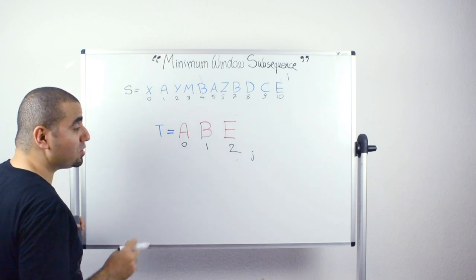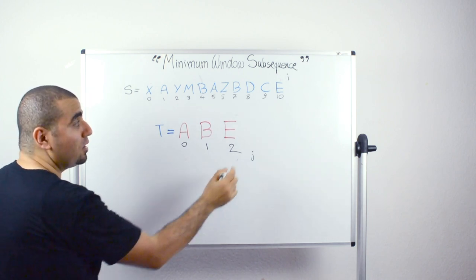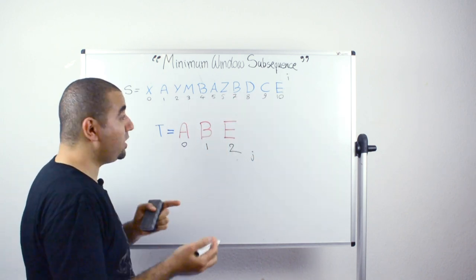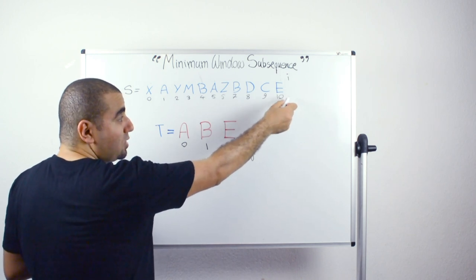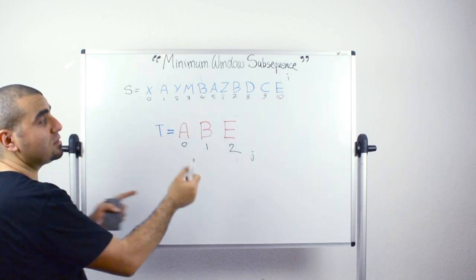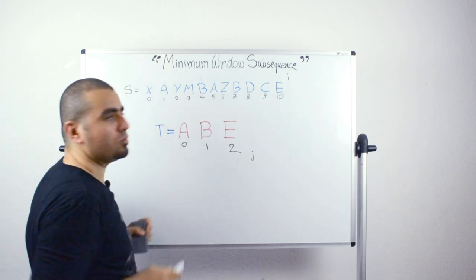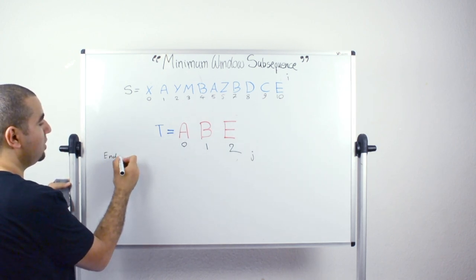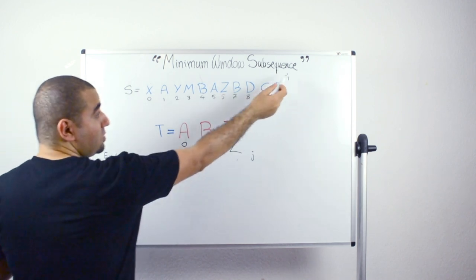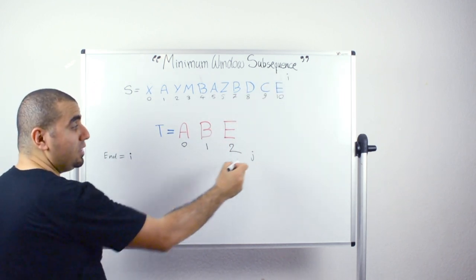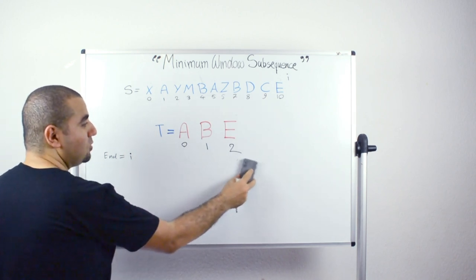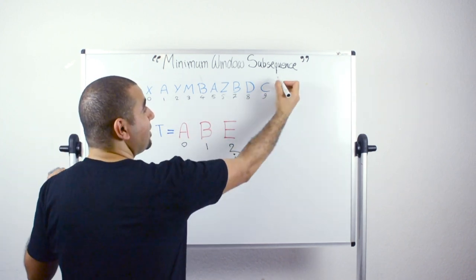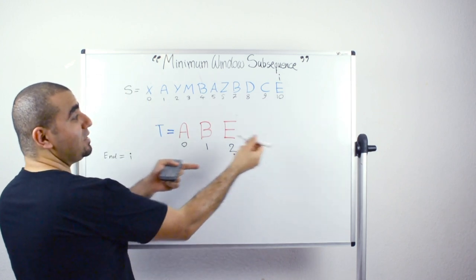At this point we put a marker for this position, because when we start getting the substring of the maximum position reached after going backward, this is going to be our minimum window substring. So we save a position called 'end position' equals i. What we do next is put j back one step to position 2, and i back at position 10, then start traversing backward.